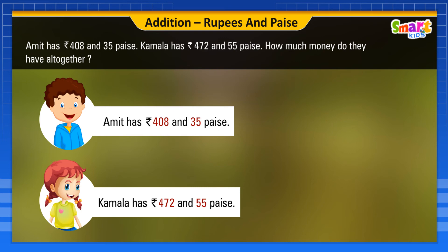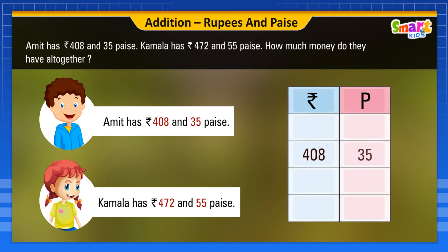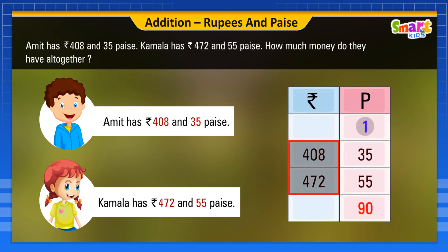First, we write Rupees and Paise in the column form as shown. Then, we add as per the rules of addition.